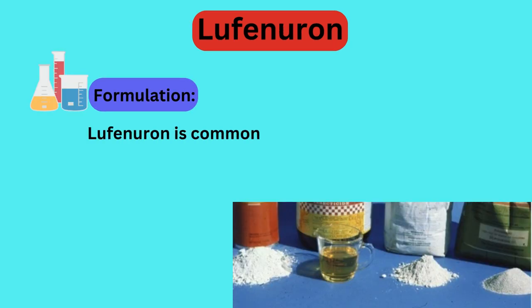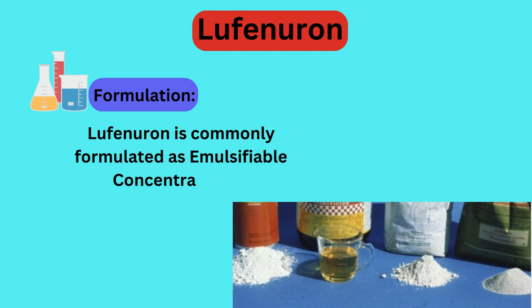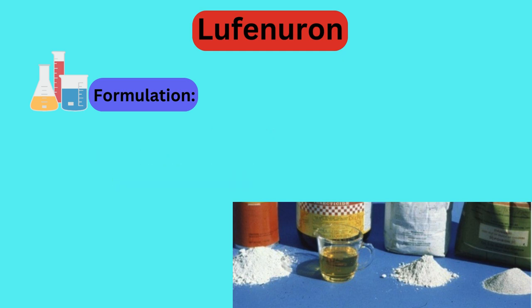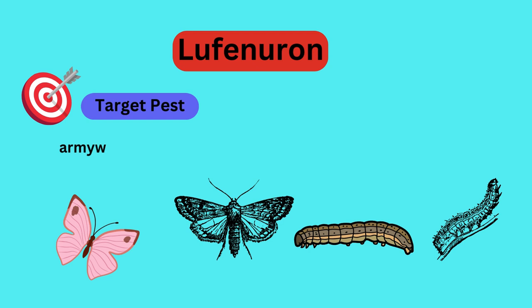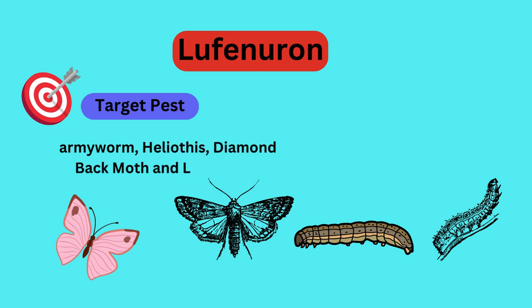Formulation: Lufenuron is commonly formulated as emulsifiable concentrate (EC). It is primarily used to control insects at their larval stages, especially fleas.